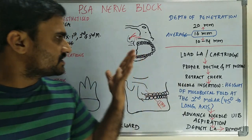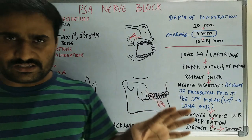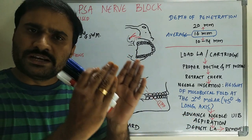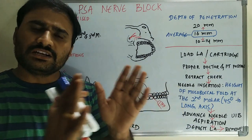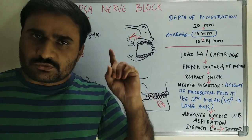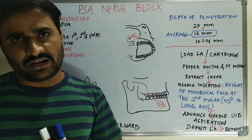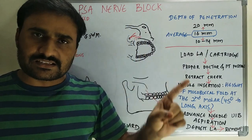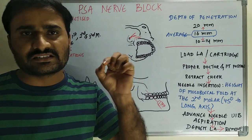Advantages are also almost the same. If you read one nerve block completely, there are some differences and you can write the same answer for any nerve block. The main advantage is that with one shot we can provide anesthesia in a wider region. The specific advantage of the PSA nerve block is that it is a highly successful injection — almost 95 percent success rate.